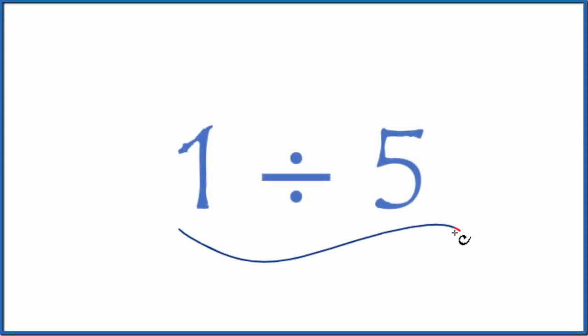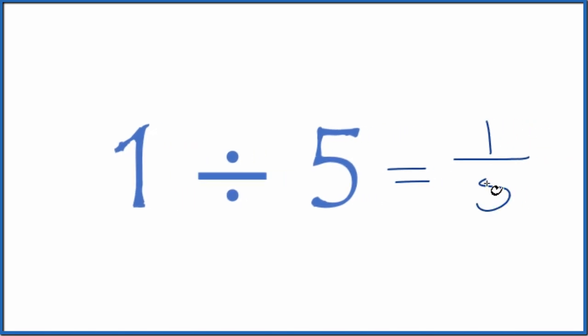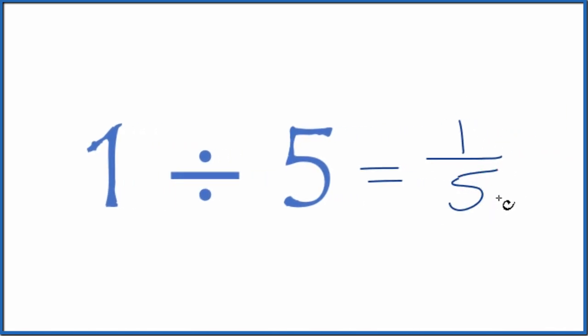Here's how you divide one by five. First off, let's consider this a fraction. One divided by five, that's the same as one over five or one-fifth. So that's our fraction.